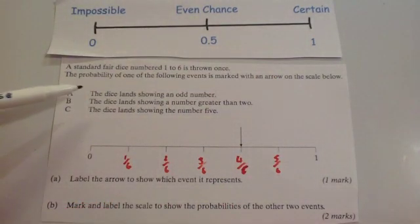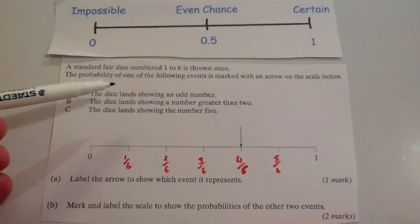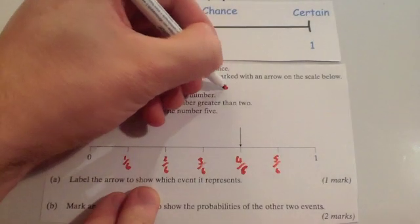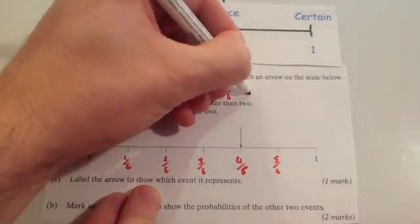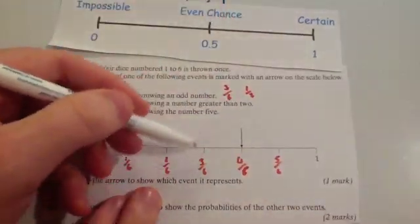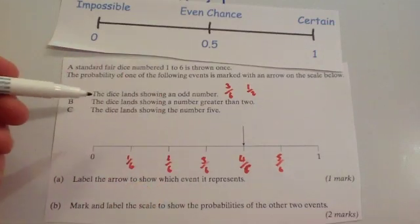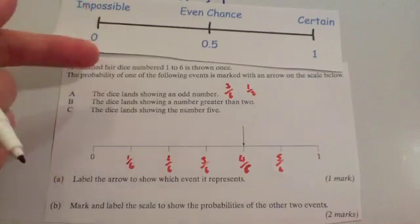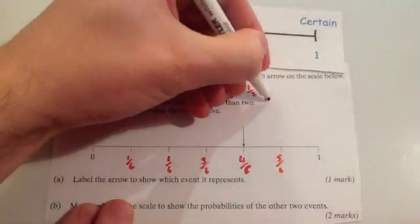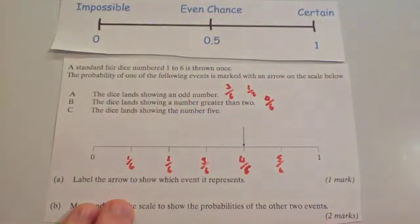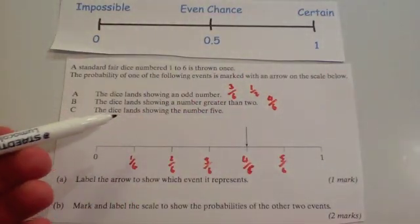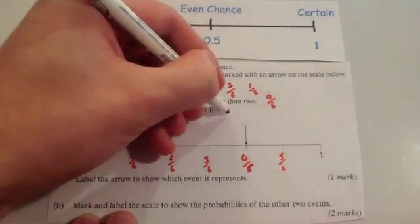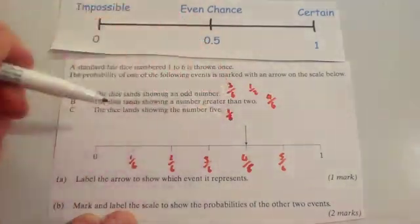Landing on an odd number — the odd numbers are 1, 3, and 5, so that's 3 out of 6, or one half. Landing on a number greater than 2 — the numbers are 3, 4, 5, and 6, so that's 4 out of 6. Landing on the number 5 — there's only one 5 out of 6, so that's 1 sixth.